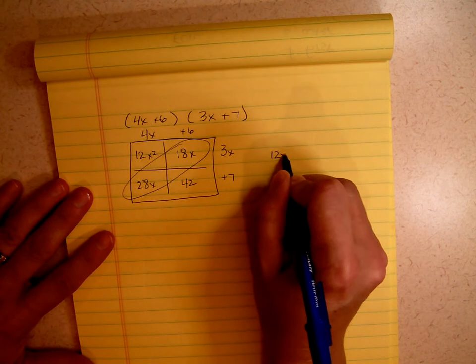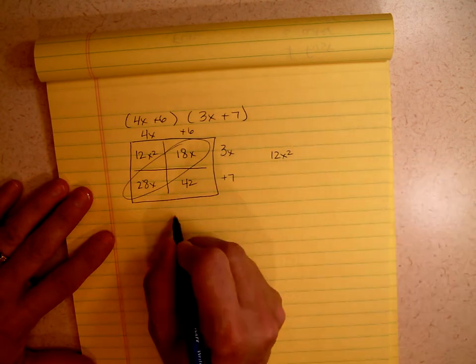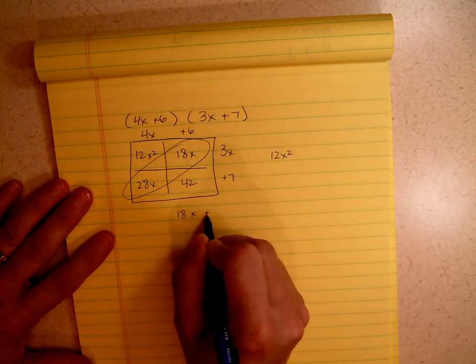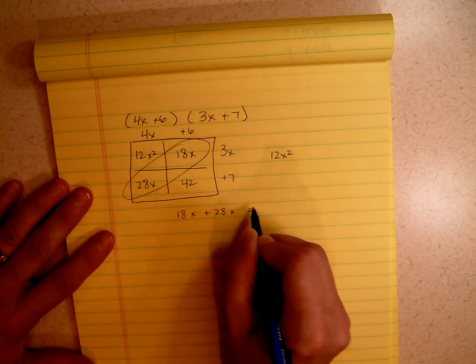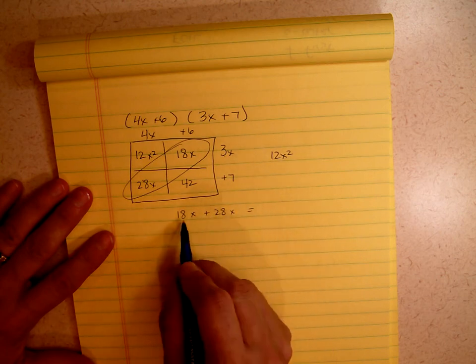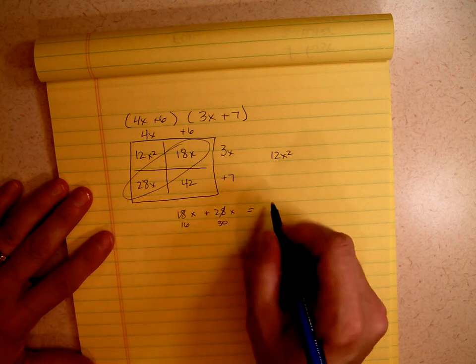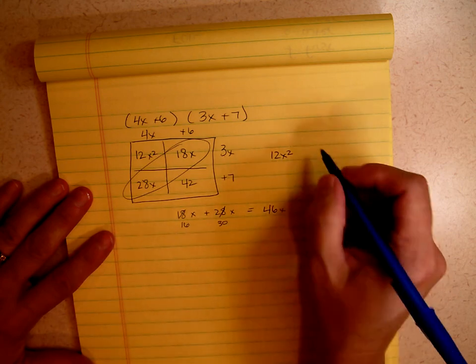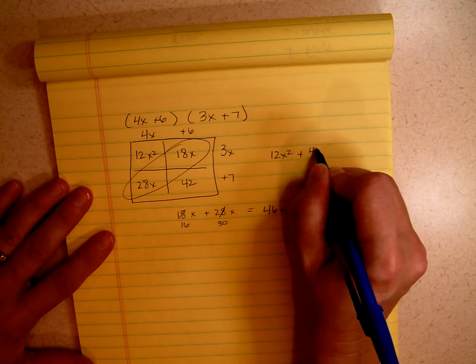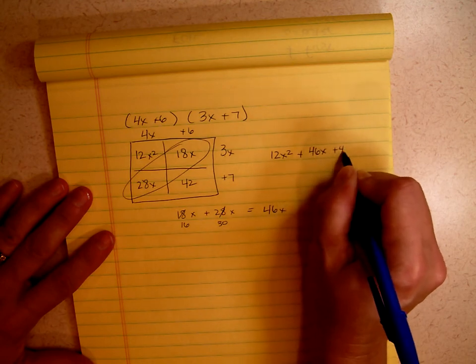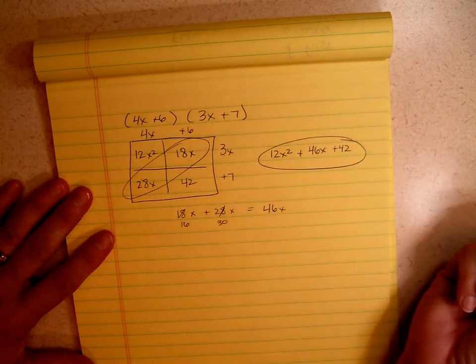So again, I'm looking right here and saying I can combine those two. So my answer is 12x squared. Let's see. That would be 18x plus 28x. Now if I took 2 from here, this would become 16, and this would become 30, and now I can see easily that that's 46x. Plus 46x plus 42. And there's your answer.